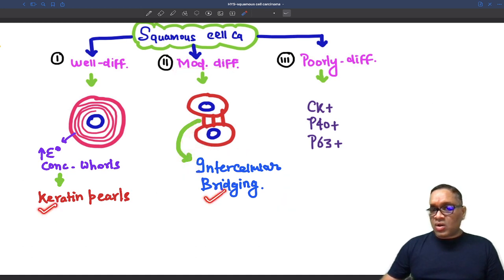And when you do not find keratin pearls or intercellular bridging, so there is no keratin pearls, no intercellular bridging, that will be poorly differentiated Squamous Cell Cancer. How we will diagnose them? By using the immunohistochemistry.